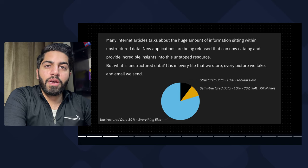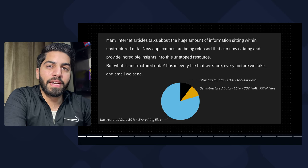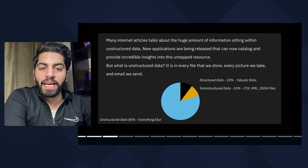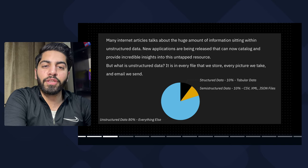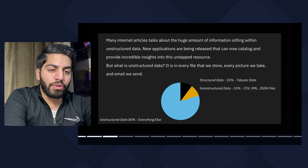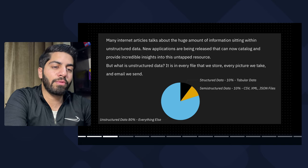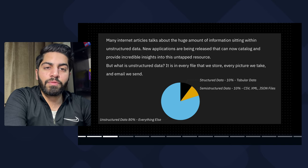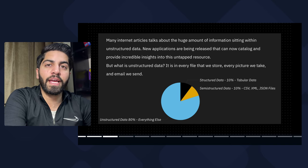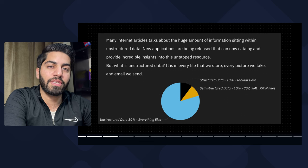Now, what is the percentage of data stored on the internet right now? Many articles talk about the huge amount of information sitting within unstructured data. New applications are being released that can catalog and provide incredible insights into these untapped resources. Looking at the chart: structured data is around 10%, semi-structured data is also around 10% containing XML, JSON, and CSV, and unstructured data is almost 80%, containing images, videos, and audio files. We need to learn how to analyze all these data types.